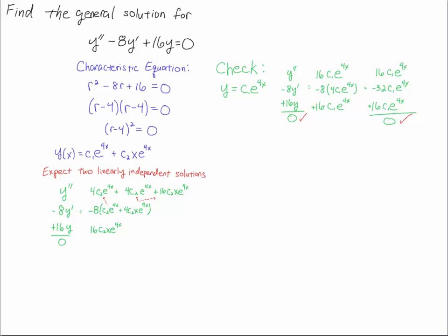Now I'm just going to do some algebra and simplify this. I collect like terms here and I get 8c2e to the 4x when I collect these two terms, plus 16c2x e to the 4x. I distribute the 8 through here, so I get minus 8 times that term, minus 32 times that term. And then you'll see that if I just add up the 8c2 minus 8c2 term, that's 0.